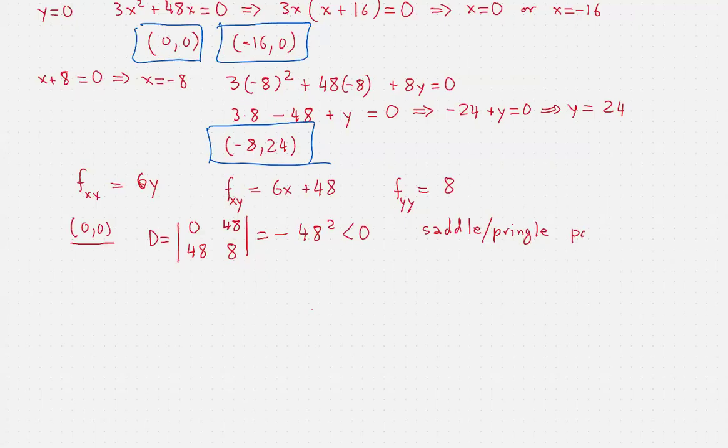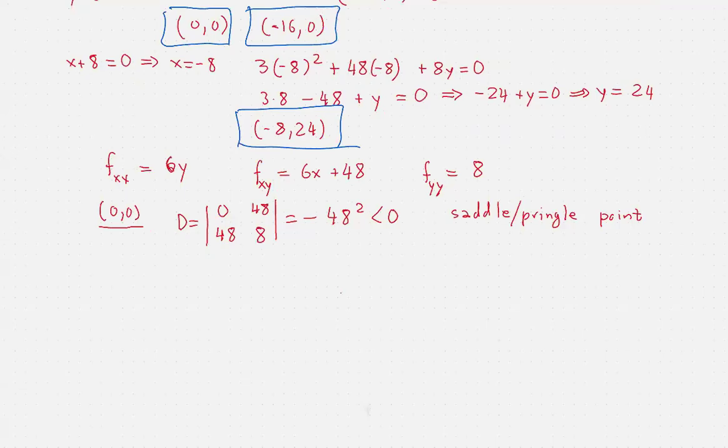Now let's look at (-16, 0). D is going to be: we have 6 times 0, which is zero for f_xx. Then f_xy is 6 times (-16), that's -96 plus 48, that's -48 here and -48 there. And I also have an 8 here. So this is minus (-48)², which is a negative number. Again, this is a saddle or pringle point.